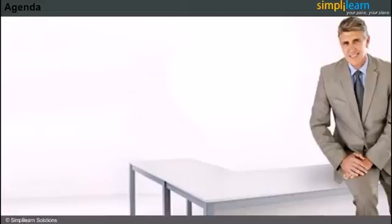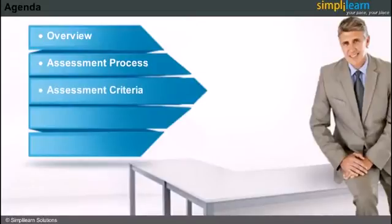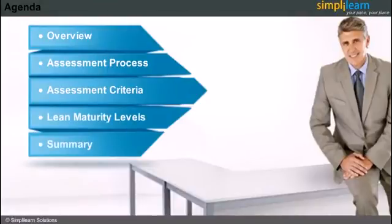Here is the agenda. We will start with an overview of lean maturity matrix. We will discuss assessing process that helps an organization to implement lean. We will then discuss assessment criteria for evaluation of lean. After this, we will introduce lean maturity levels that an organization uses for assessment and improvement.